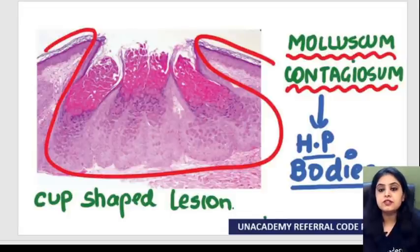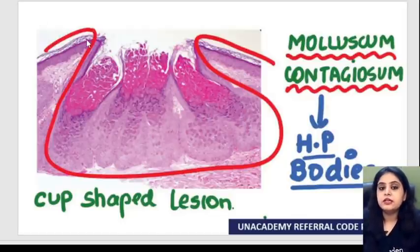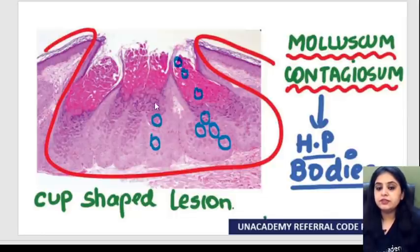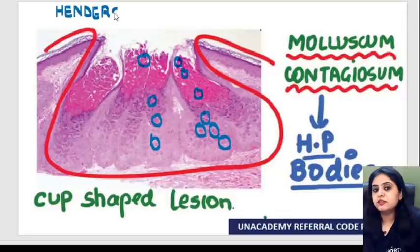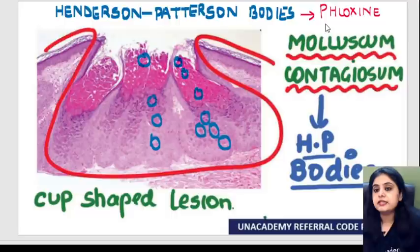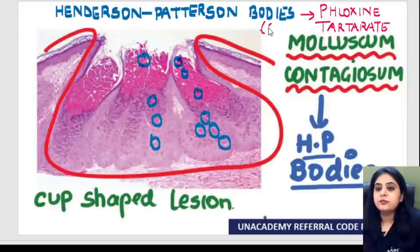The next characteristic image is the cup-shaped lesion of molluscum contagiosum. Here you have a cup-shaped lesion, and inside that lesion the epithelium has pink-colored bodies extending throughout — known as HP bodies, which stands for Henderson-Patterson bodies. There is also a special stain used in pathology for these bodies: the phloxine tartrate stain.